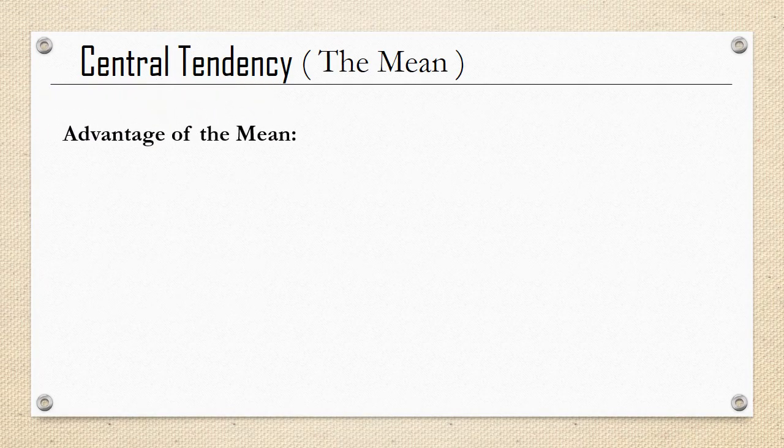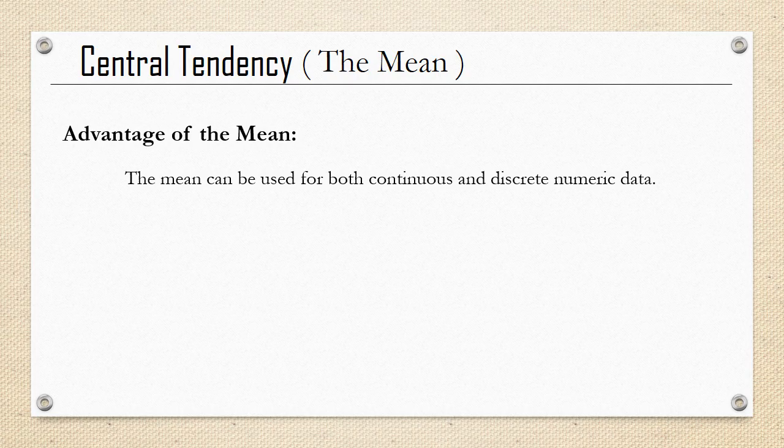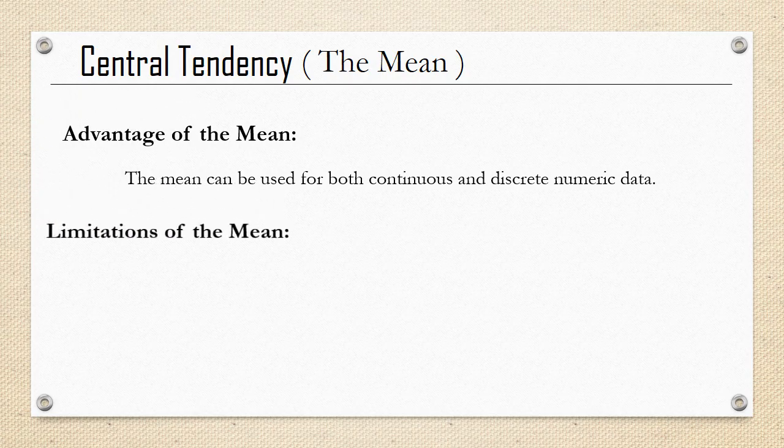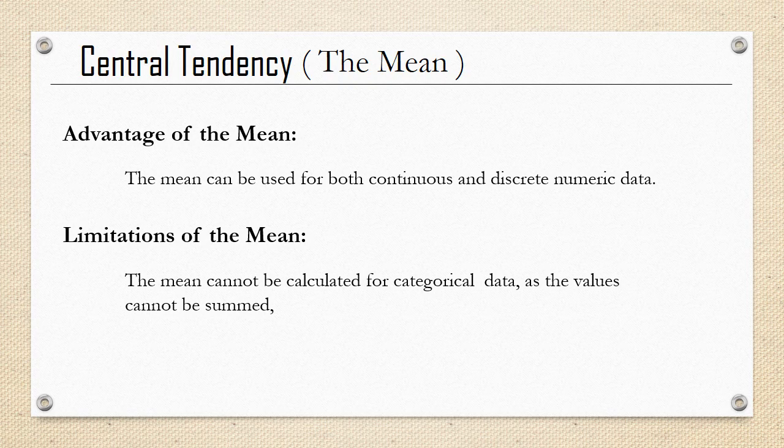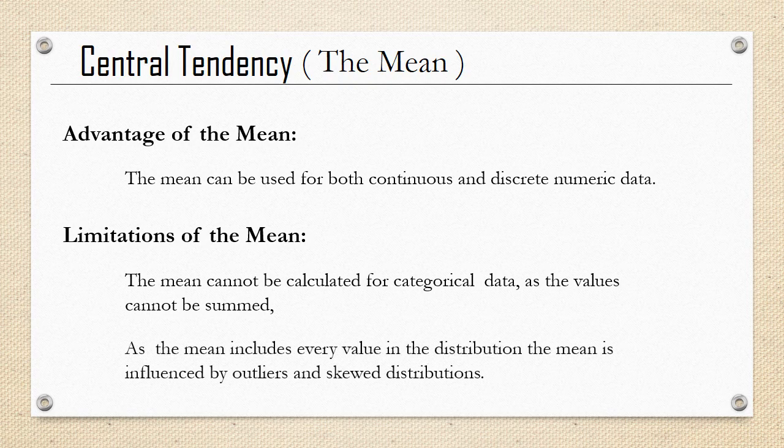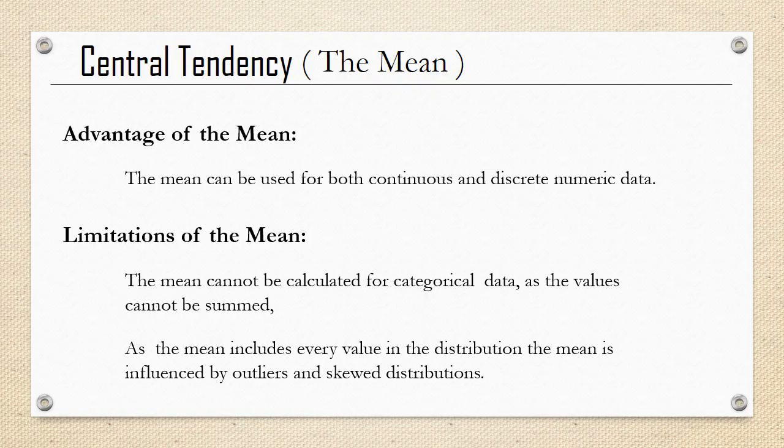The advantage of the mean is the mean can be used for both continuous and discrete numeric data. Limitations of the mean: the mean cannot be calculated for categorical data as the values cannot be summed. As the mean includes every value in the distribution, the mean is influenced by outliers and skewed distributions.